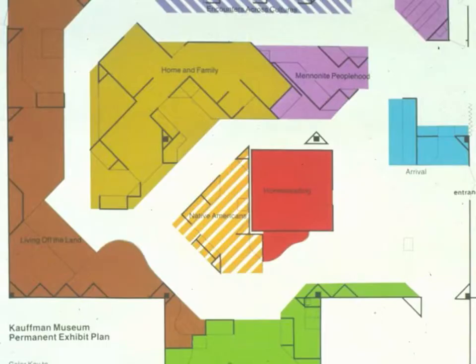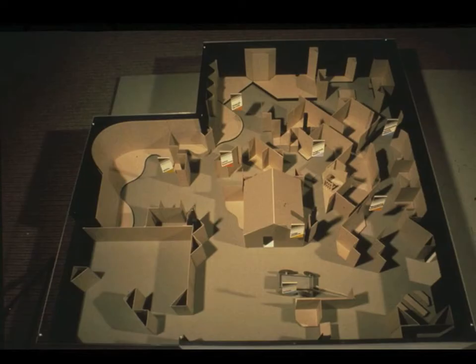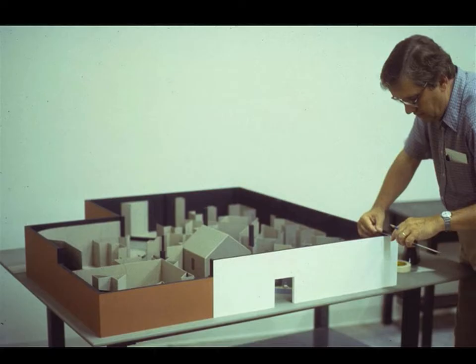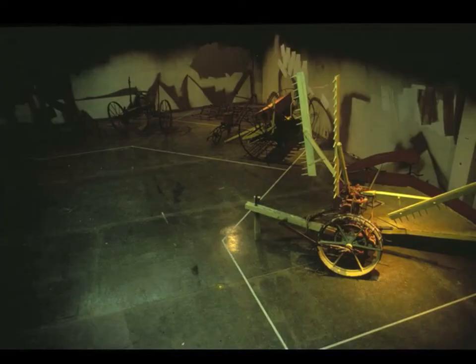Planning committee discussions eventually resulted in a consensus that produced a floor plan and a model. The plan was an organic plan — a form that grew out of numerous discussions by many participants. It belonged to many persons. It was not superimposed on the collection; it grew out of the collection. It echoed the size and shape of the principal objects in the exhibits.